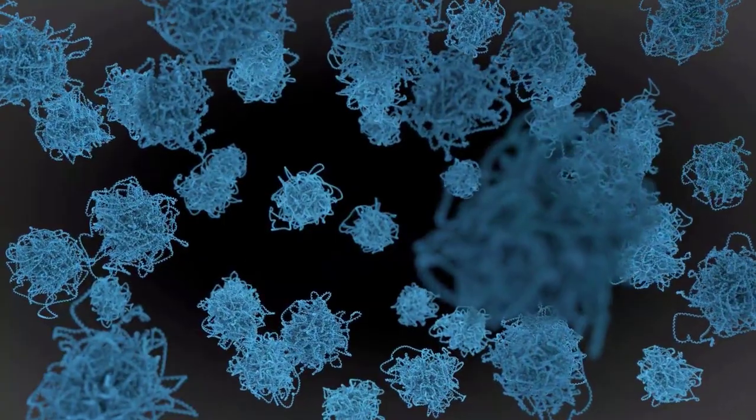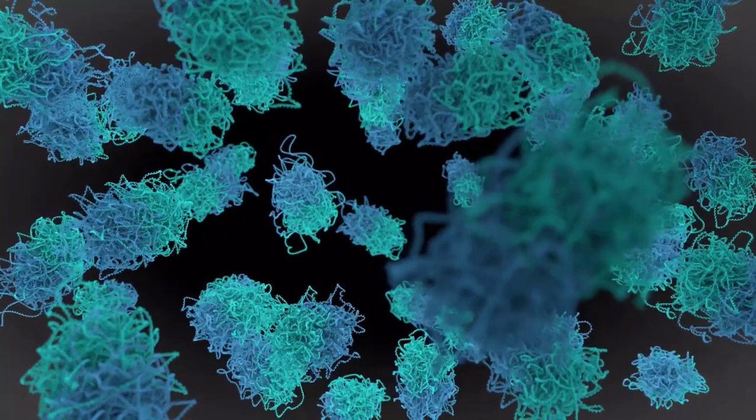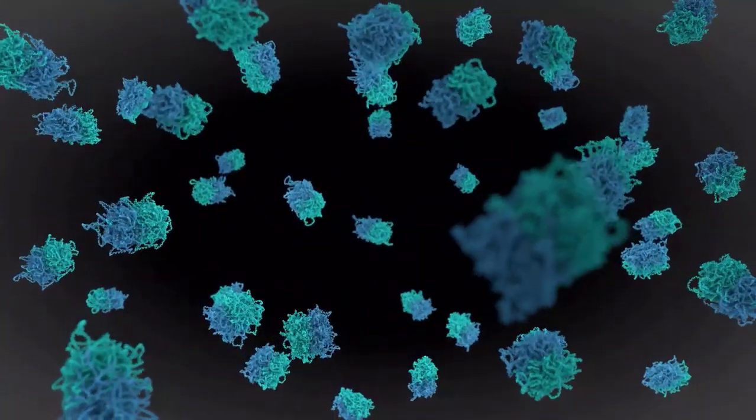When a cell gets ready to divide, it first copies all of its DNA. Then, the chromosomes change form. They condense.